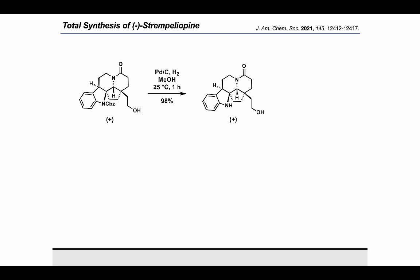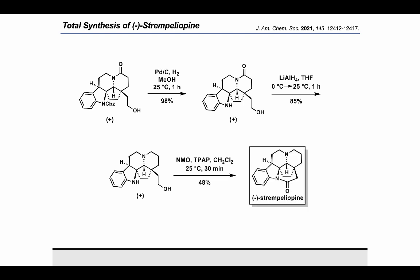From here, strempeliapine can be accessed in three steps. The CBZ group was removed using palladium on carbon under an atmosphere of hydrogen in 98% yield. The amide was then reduced using lithium aluminum hydride in 85% yield. Finally, lactamization under late-stage oxidation conditions gave strempeliapine in 48% yield.